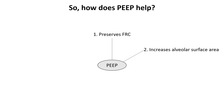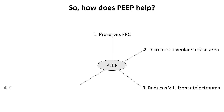Additionally, PEEP protects against ventilator-induced lung injury from atelectrauma, a condition occurring from repeated collapsing and reopening of alveoli. This lung-protective effect is particularly beneficial in ARDS, where the lungs are highly susceptible to injury. Moreover, PEEP counteracts absorption atelectasis, a condition where high FiO2 replaces nitrogen in the alveoli, leading to collapse when oxygen rapidly diffuses out.